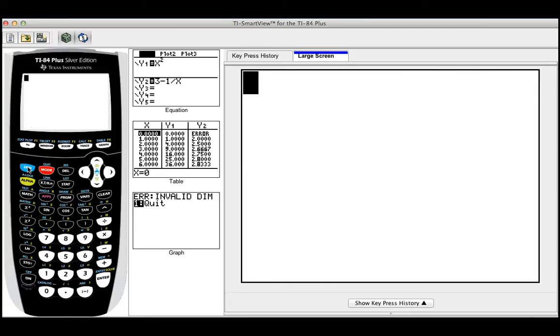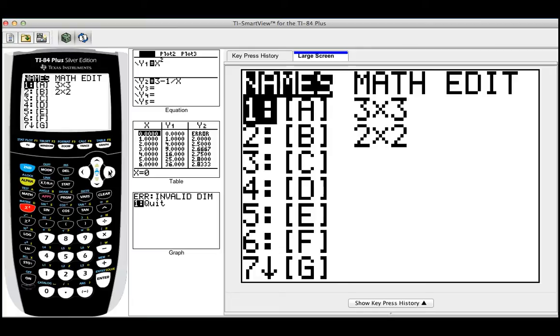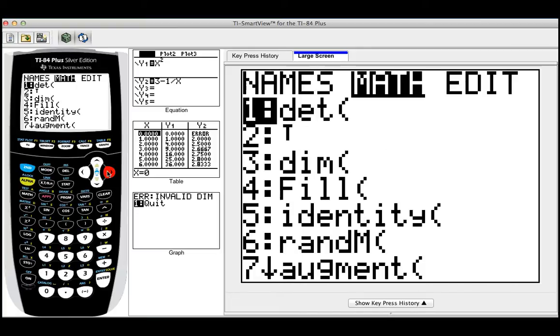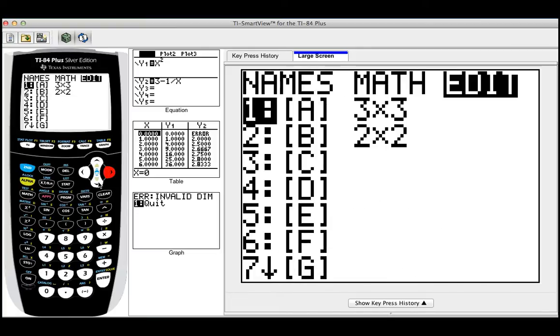We need to build the new matrix that's going to give me the expected value. So you go back to second matrix, and I promise you we're almost done, then go to edit, but once you're on edit, you need to go down to matrix B. Look, it needs to be on the B.